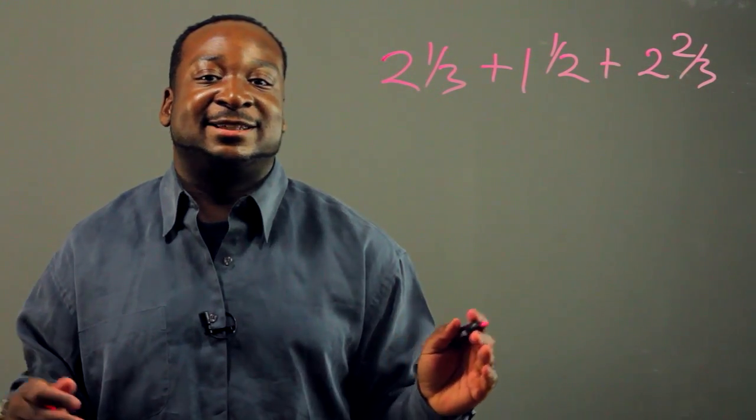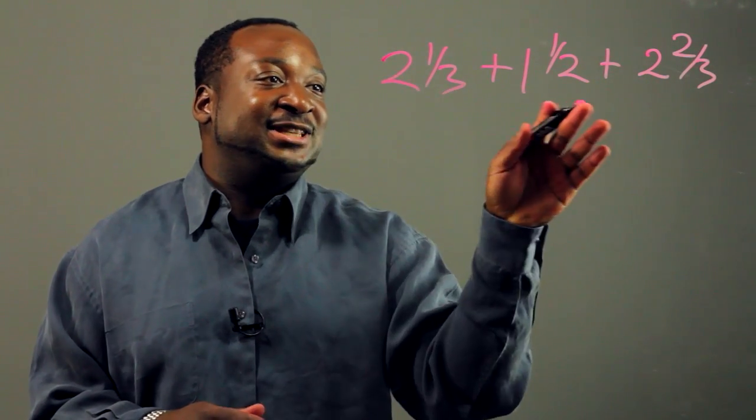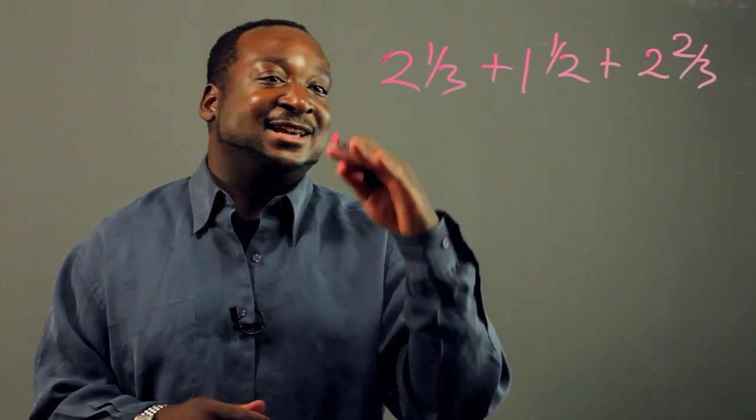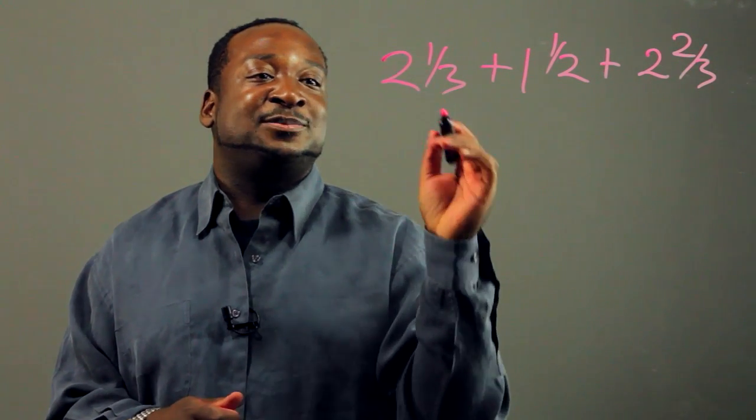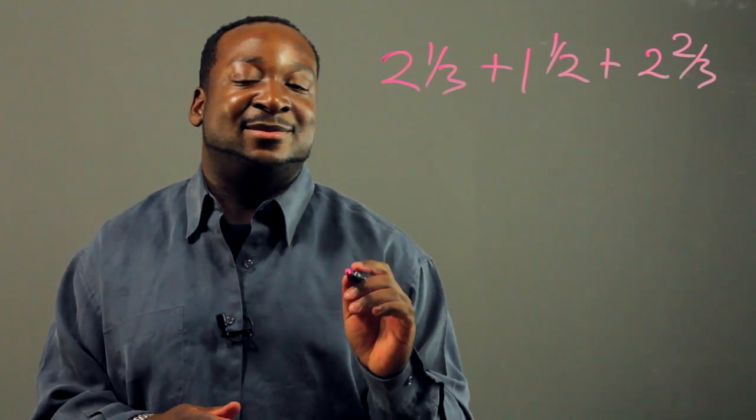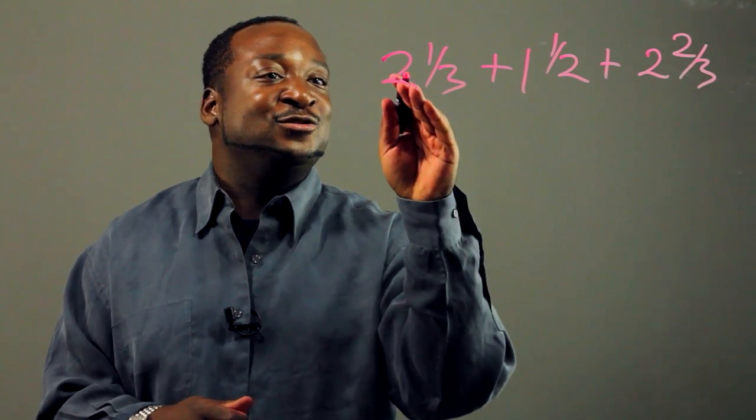The first thing you want to do is you want to normalize it. You want to change all of these mixed fractions into normal fractions. To do that, you multiply the whole number times the denominator, which is the number on the bottom, and you want to add the numerator.